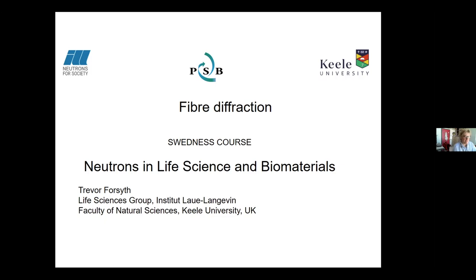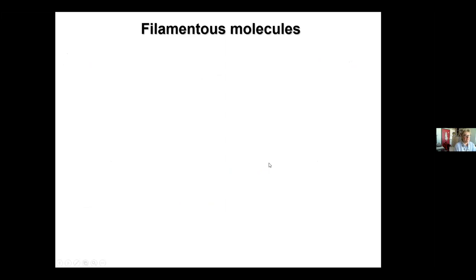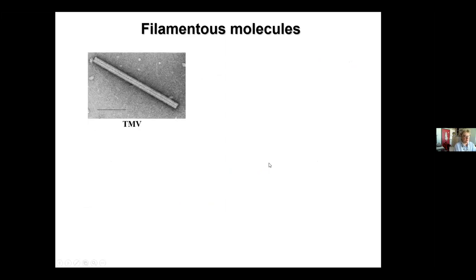Fibre diffraction is all about filamentous molecules. This is tobacco mosaic virus - one of the most famous cases of fibre diffraction. That's an electron micrograph. There was a lot of interest in tobacco mosaic virus for its helical structure and the amazing data it gave.